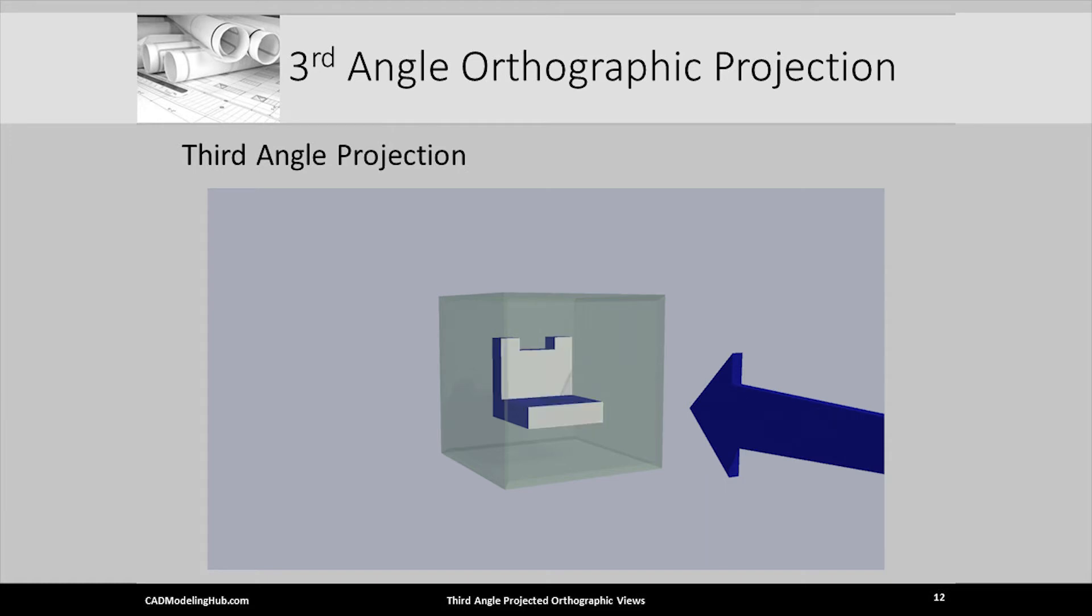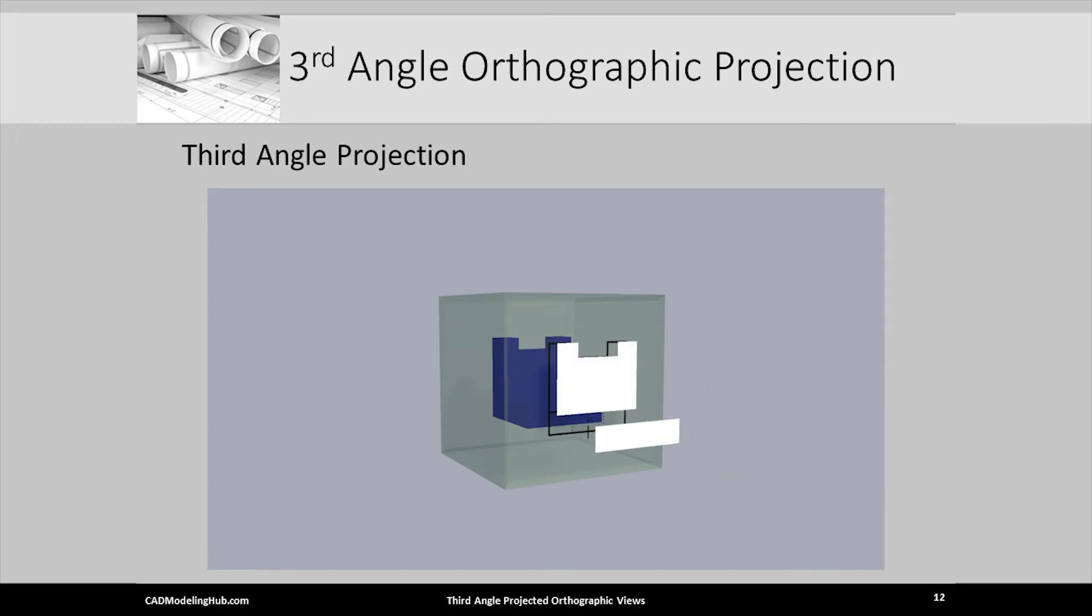We chose the viewing direction that shows the most detail of the object, represented here by the large blue arrow. We identify or highlight all visible surfaces. These surfaces are brought or projected forward, leaving their imprint on the front wall of the glass cube, and we label this our front orthographic view.